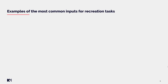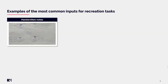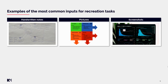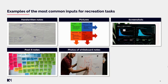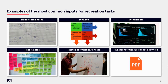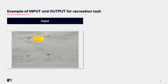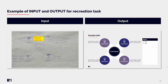Now we will take a look at examples of the most common inputs for recreation tasks. It could be handwritten notes, pictures, screenshots, posted notes, photos of whiteboard notes, or PDFs from which we cannot copy the text. It is always important to check your PDF, because from some PDFs you are able to copy the text, but in other cases when a PDF contains pictures, you have to recreate the text manually. If unsure, always check with your admin.